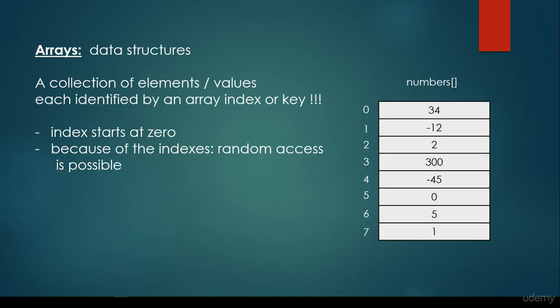What is an array? Basically arrays are data structures, a collection of elements or values, each identified by an array index or also known as keys. So we have values, and these values are identified by an index or a key.